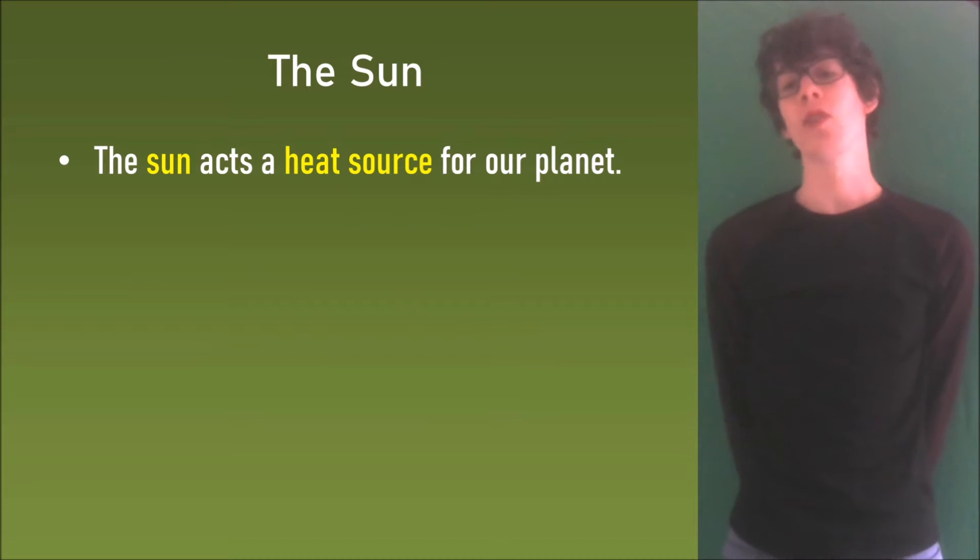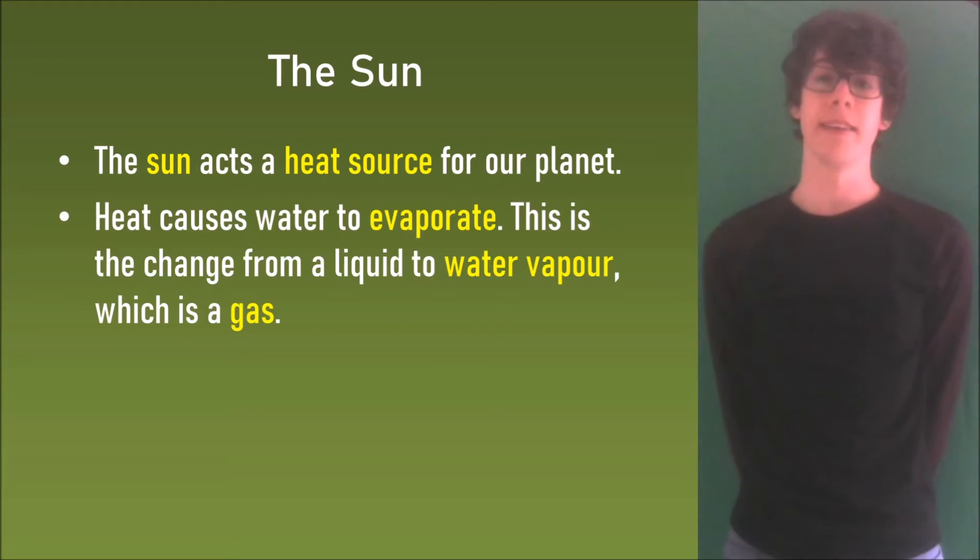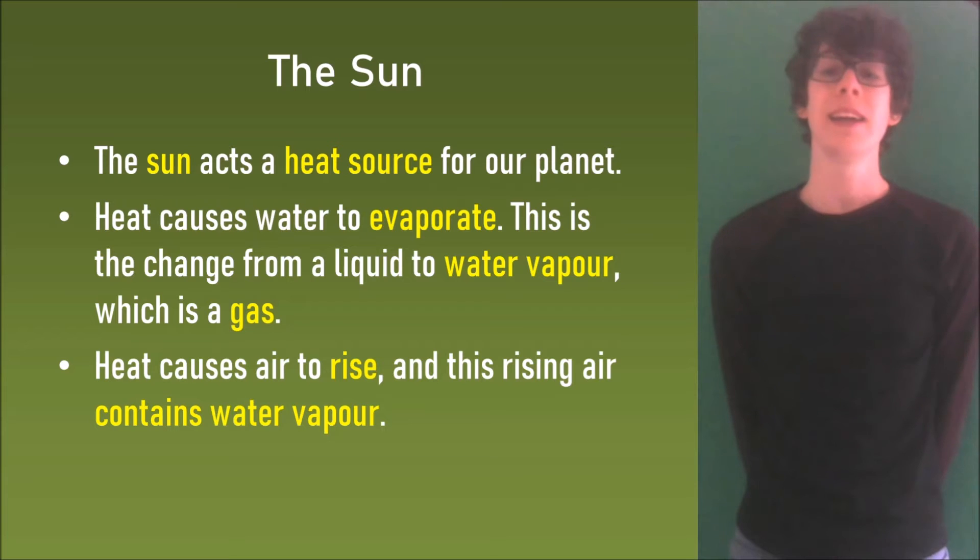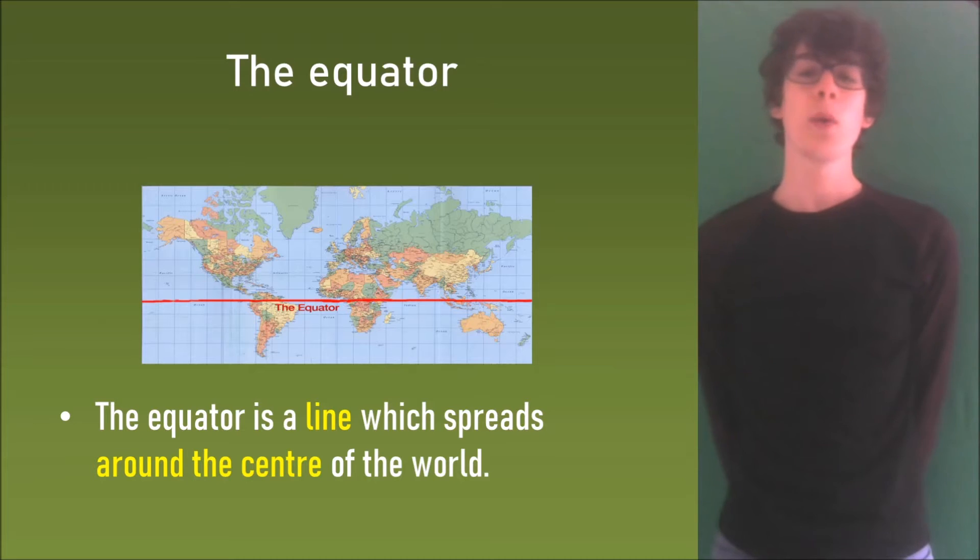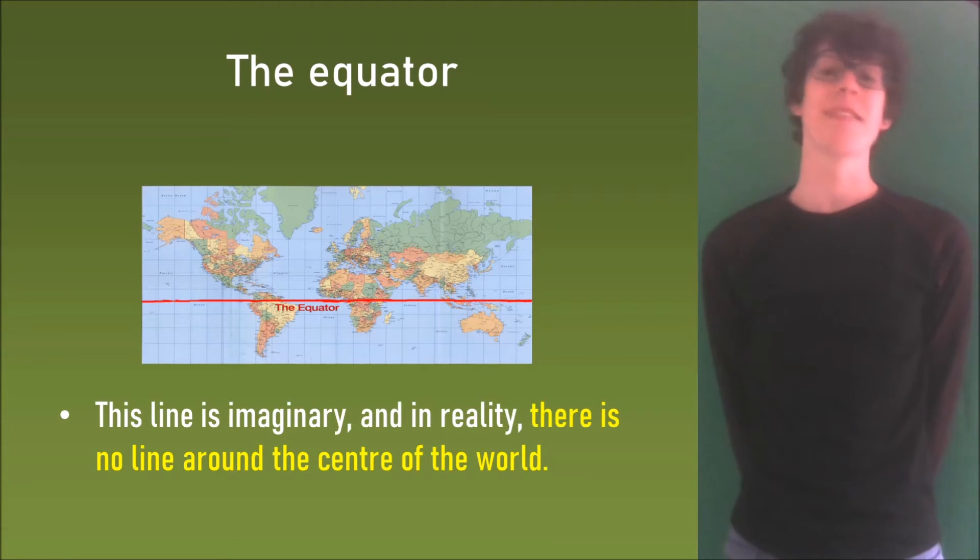So the sun acts as a heat source for our planet. Heat causes water to evaporate. This is the change from a liquid to water vapor which is a gas. Heat causes air to rise and this rising air contains water vapor. The equator is a line which spreads around the center of the world. The line is imaginary and in reality there is no line around the center of the world.